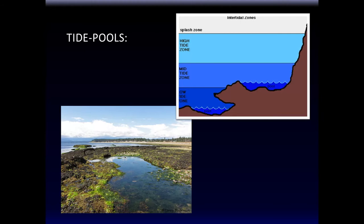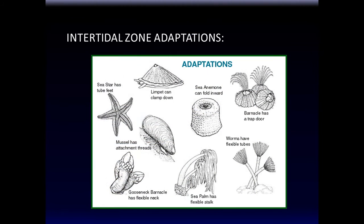Tides also create tide pools — not to confuse with tadpoles. When the high tide recedes, pools of water remain; these are tide pools, common in Hawaii, with their own mini-ecosystems. In intertidal zones, sea stars have tube feet — suction feet — to hang on. Limpets can clamp down, and mussels have attachment threads. These are various different adaptations that allow organisms to survive in intertidal zones.